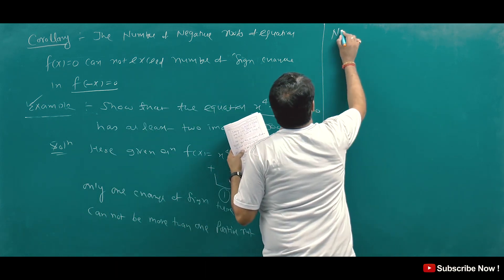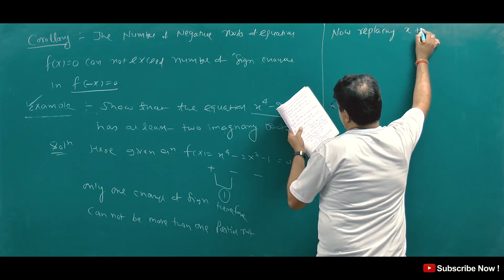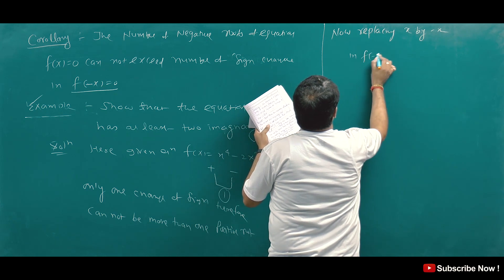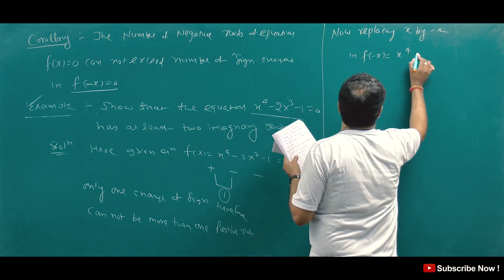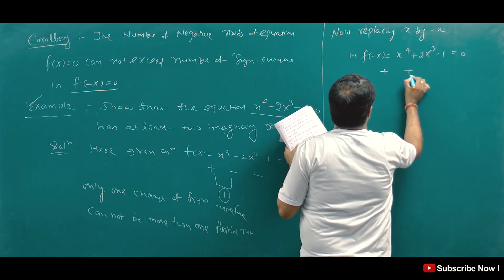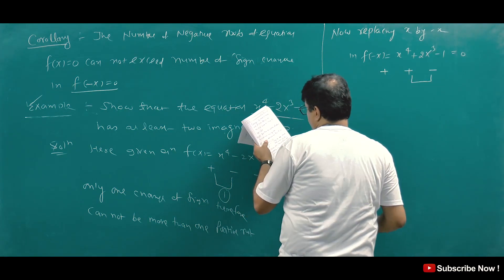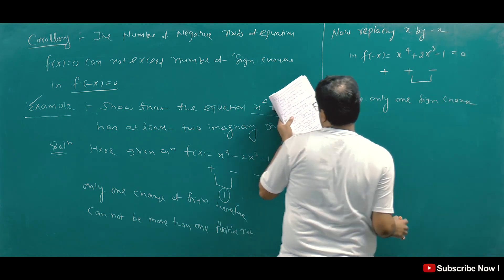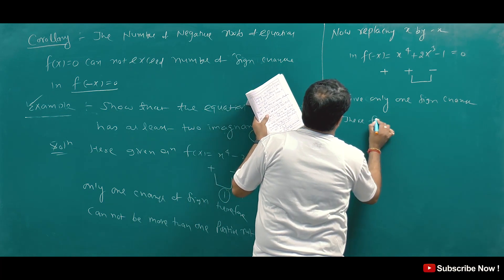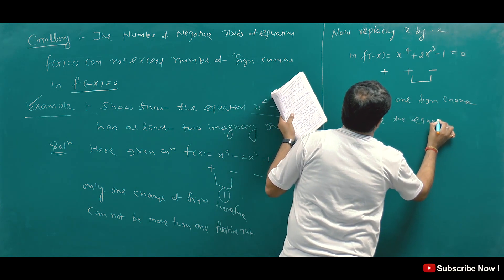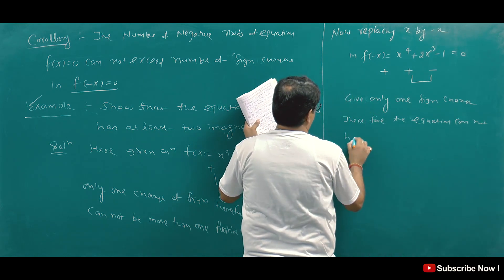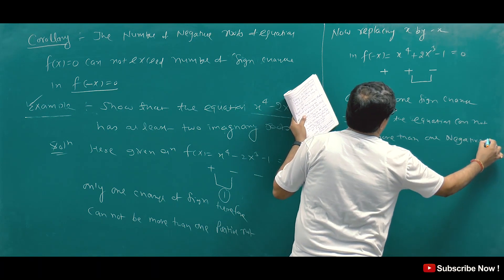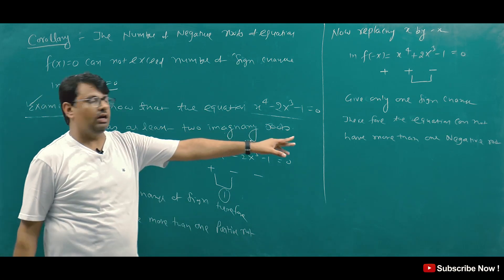Now replacing x with -x: F(-x) gives x⁴ + 2x³ - 1 = 0. The signs are plus, plus, minus — so there is only one sign change. Therefore, the equation cannot have more than 1 negative real root.